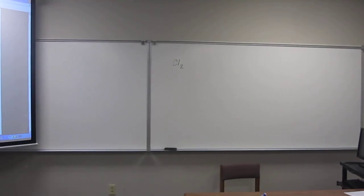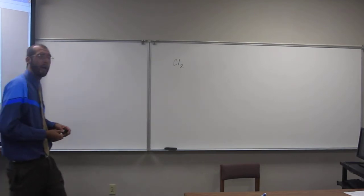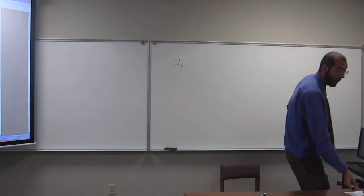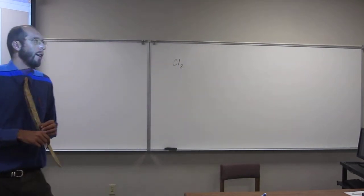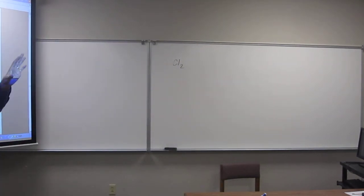Okay, so let's try to build Cl2, the molecule Cl2. So what do we know about Cl? Chlorine atom. If we look at the periodic table, we know how many valence electrons it has.